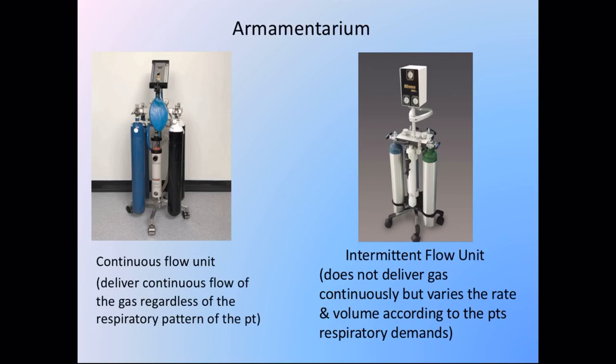Two kinds of units are available for supplying nitrous oxide: the continuous flow unit and the intermittent flow unit. The continuous flow unit delivers a constant gas flow regardless of the patient's respiratory pattern, while the intermittent flow unit varies the rate and volume according to the patient's respiratory demands. There is a larger margin of error in the intermittent flow unit compared to the continuous flow unit.